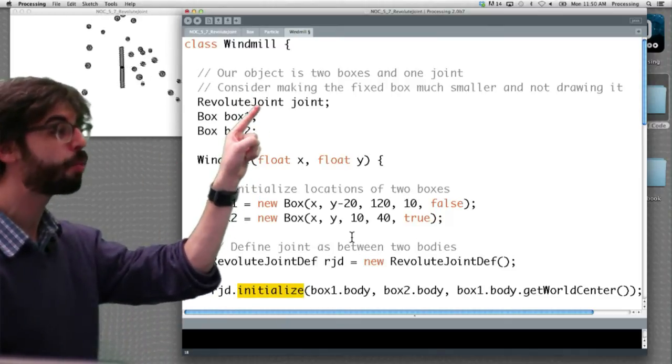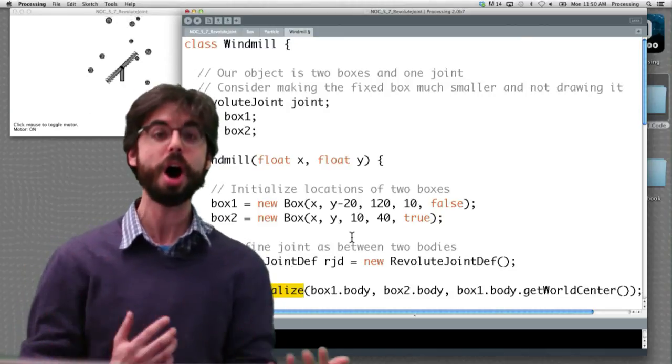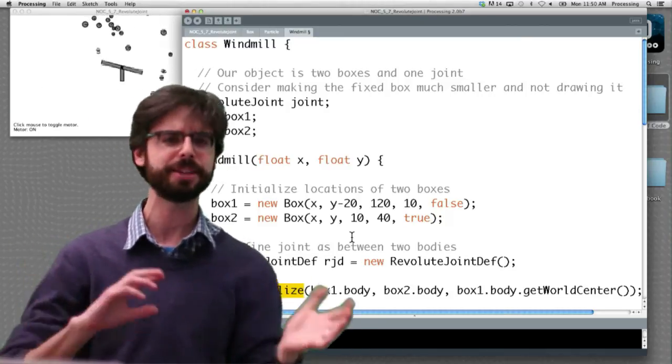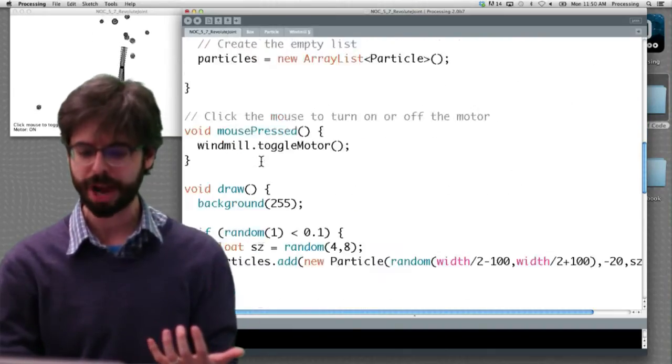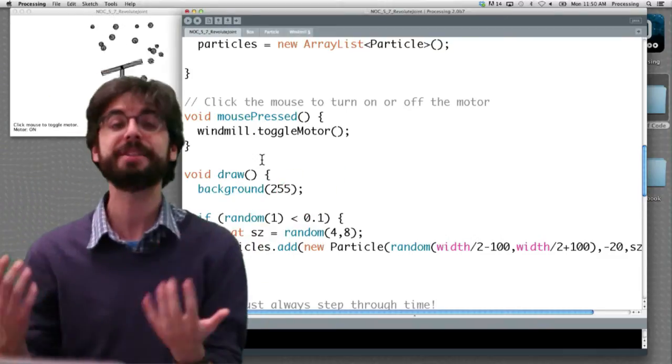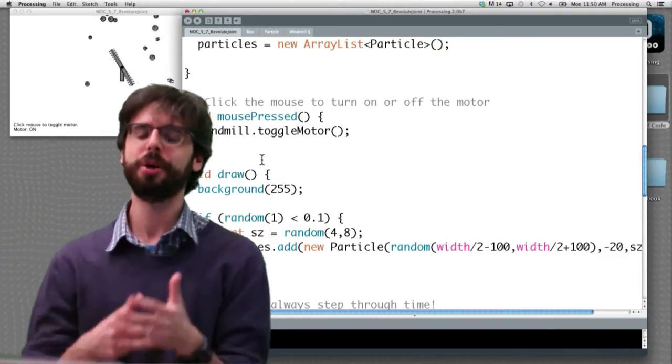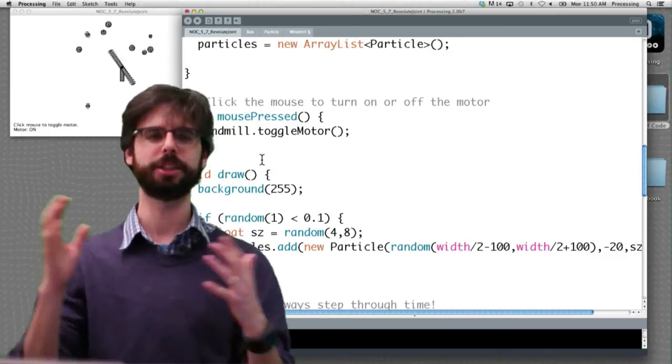So one thing that you can see that's a little bit different about this than the distance joint example is we are keeping a reference to that joint object. Why? Because we want to be able to turn the motor on and off. We might want to affect its speed, its torque, all that kind of stuff later. And we can see that's what we're doing in the main program. When we click the mouse, we say, hey, toggle the motor. And in that function, we can set the motor's status to false or true, which means it's off or on.